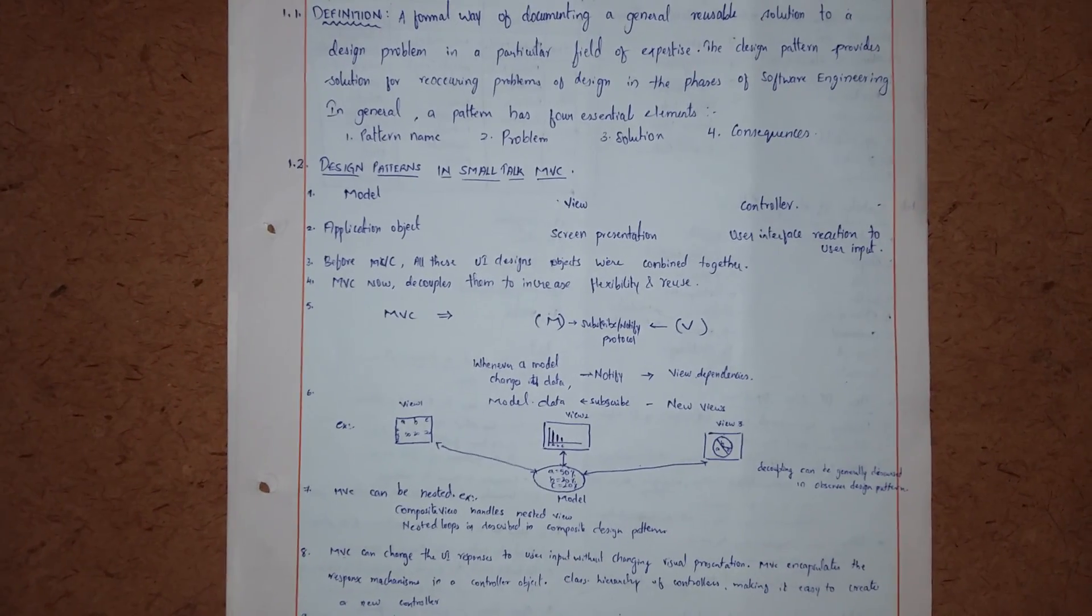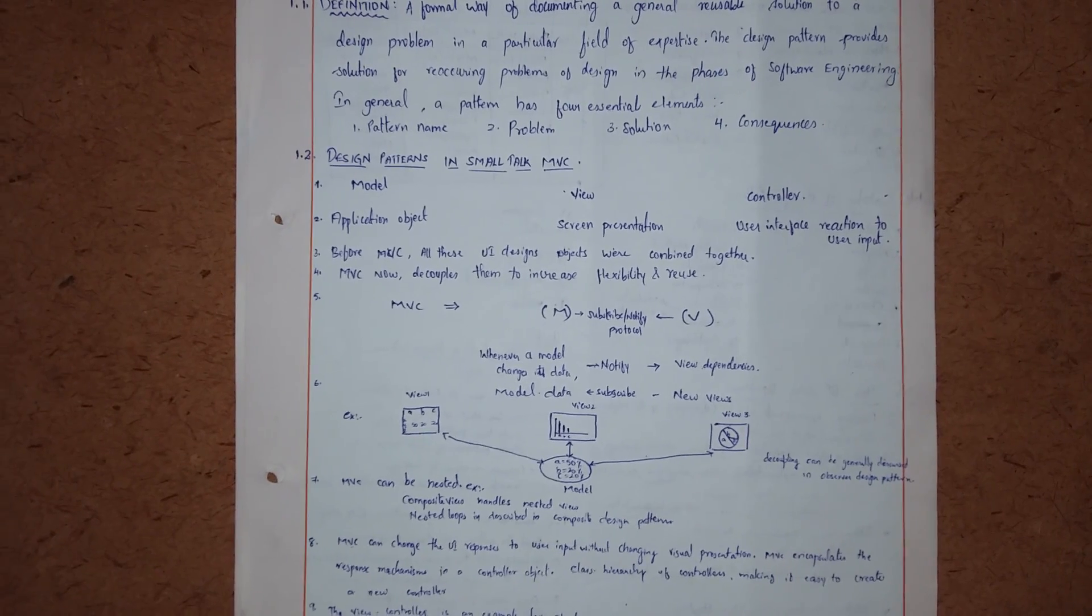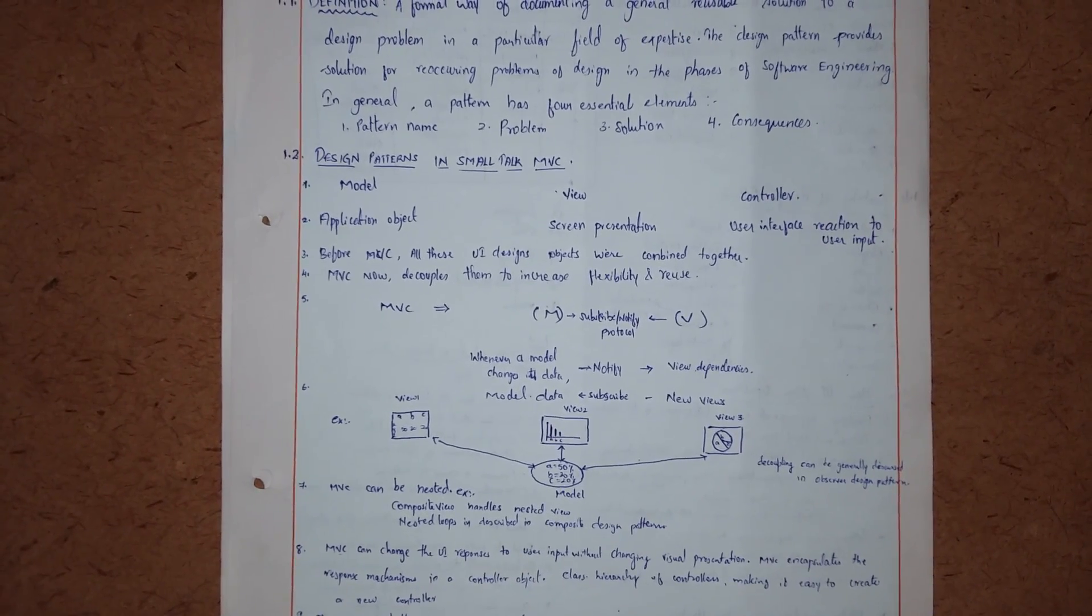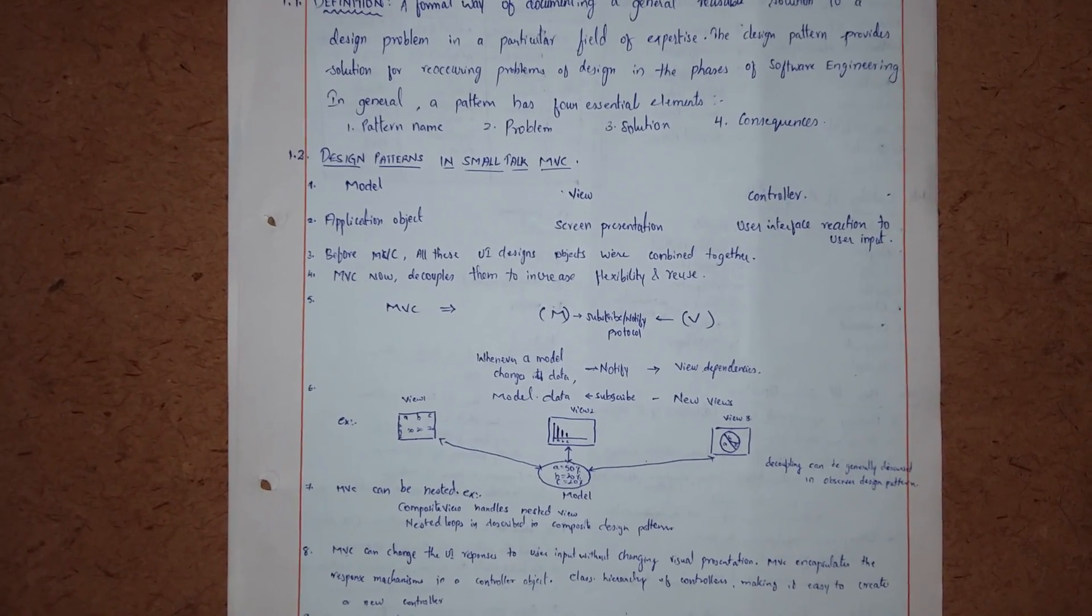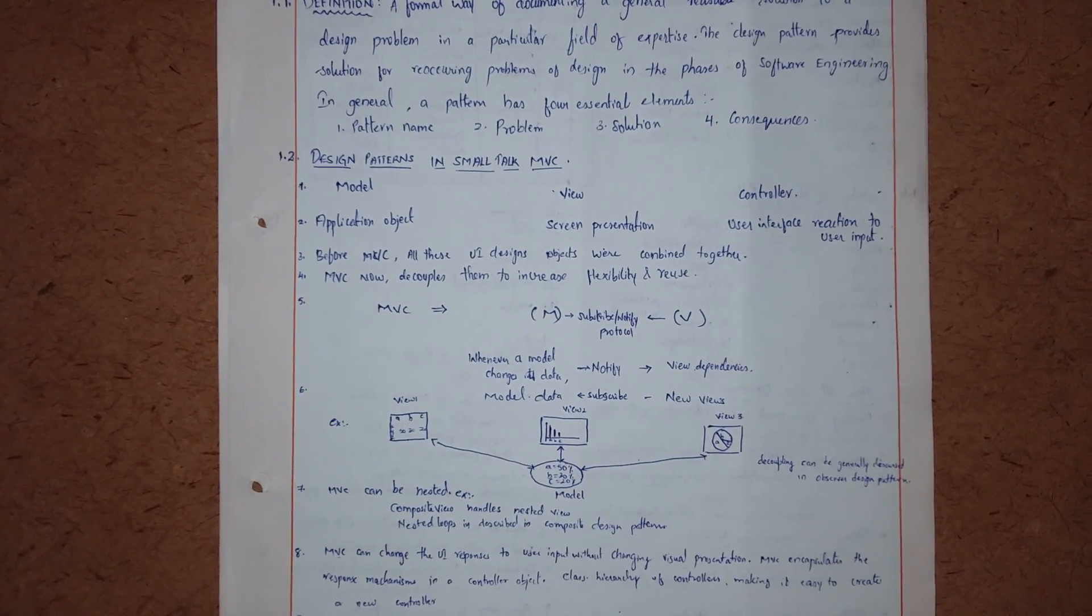Before MVC, all the user interface design objects were combined together resulting in complexity and much more complex nature of compilation of our project. Now when MVC arrives, the decoupling of them will increase the flexibility and reuse of the project.